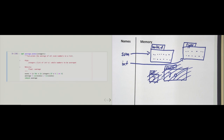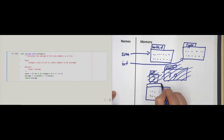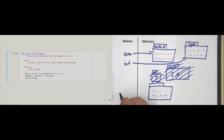What happens when we define the function? We see nothing — there is no output. In our memory diagram, what we did is effectively create a new box and put code in it. The name that references this object would be 'average_evens', which makes a reference to the box. By executing the cell, all we do is create a box with code in it and a name that references it.